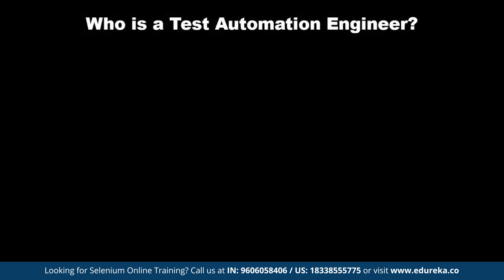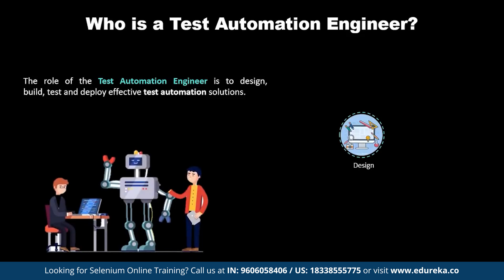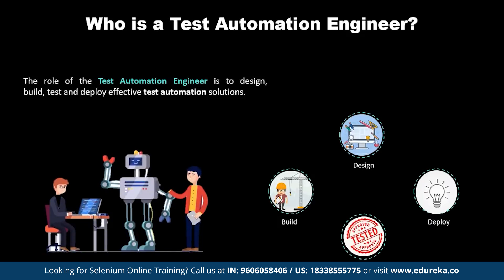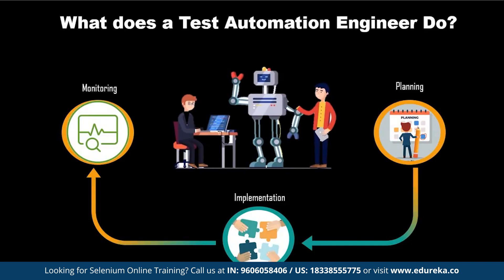Now that you know what software testing is, let's see who is a testing automation engineer. The role of the test automation engineer is to design, build, test and deploy effective test automation solutions. To fulfill this role, the automation engineer applies appropriate automation technologies to meet the short and long term goals of the testing organization. An automation engineer basically utilizes technology to improve, streamline and automate a manufacturing process, and they are responsible for planning, implementation and monitoring of such technology.